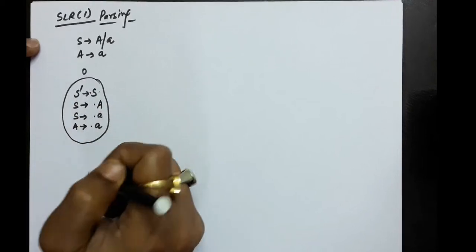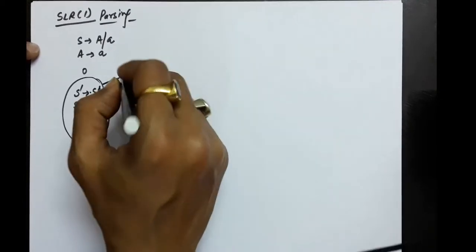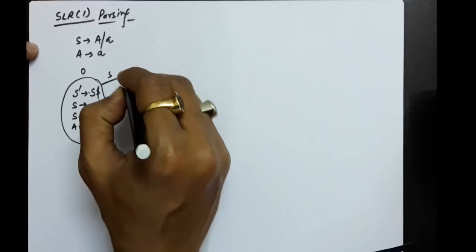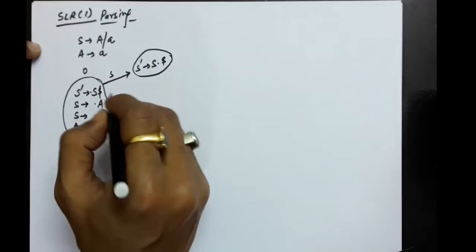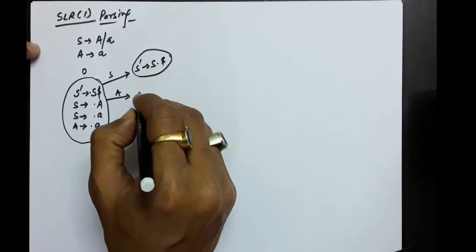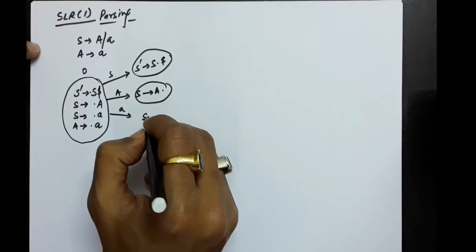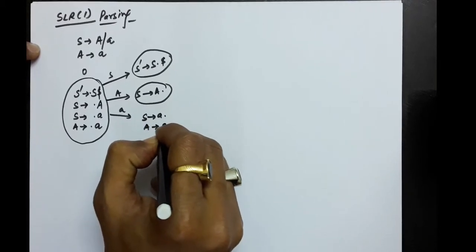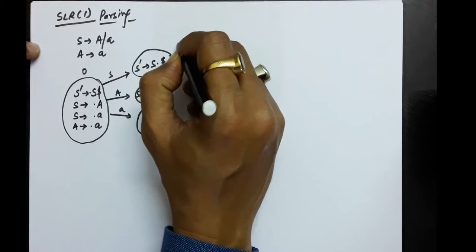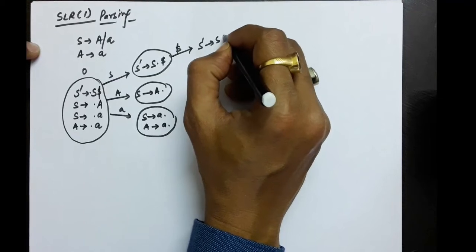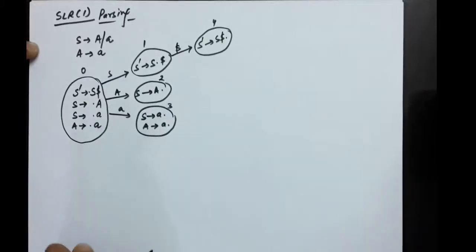This is the zero state. The dollar is also there after the start symbol, which will help in making the LR0 or SLR1 parsing table. Taking capital S, the dot shifts one step giving S' produces S dot dollar. Taking capital A gives S produces A dot. Taking small a gives S produces a dot and A produces a dot. Taking dollar gives S' produces S dollar dot. Let's number these states one, two, three, and four.